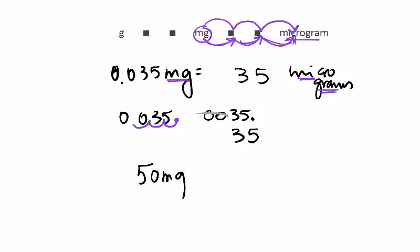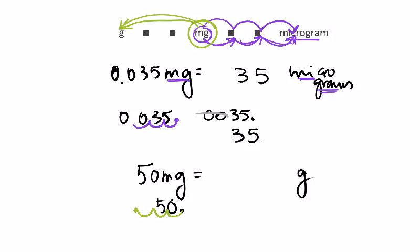One last example: 50 milligrams into grams. Grams are a thousand times bigger than milligrams, so we go left. Write 50, place the decimal point after the zero, and move three places to the left — one, two, three — filling the gap with a zero. We get 0.050. The trailing zero rolls off, but we keep the leading zero for the whole part of the number. Final answer: 0.05 grams.